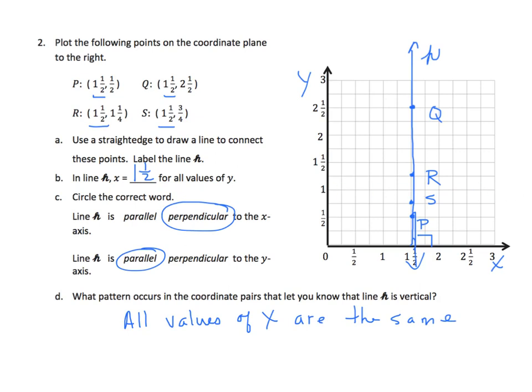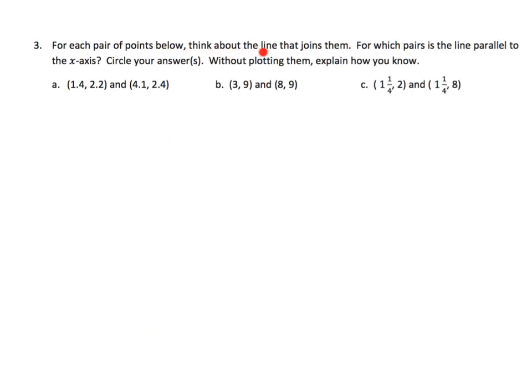For each pair of points below, think about the line that joins them. For which pairs is the line parallel to the X-axis? Circle your answers without plotting them. Explain how you know. Well, I'm not going to plot them, but I am just going to make a little reference here. This is my X, and this is my Y-axis. And my X-axis is horizontal. So if I want a line parallel to the X-axis, it's got to be horizontal. And remember what we learned in the previous one? Our values for Y would always be the same for a line that is parallel to the X-axis. So we're going to look at our values of Y. We have 2.2 and 2.25 here. So that doesn't work out. I have 9 in my Y, for my Y coordinate, and 9 here. So yes, that one is correct.